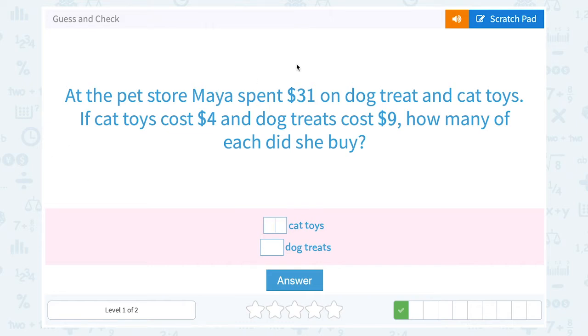At the pet store, Maya spent $31 on dog treats and cat toys. If cat toys cost $4 and dog treats cost $9, how many of each did she buy?